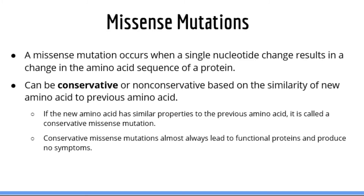The next type of point mutation we will talk about are missense mutations. A missense mutation occurs when a single nucleotide change results in a change in the amino acid sequence of a protein. Missense mutations can be conservative or non-conservative based on the similarity of the new amino acid to the previous amino acid. If the new amino acid has chemical properties which are similar to the original amino acid, the protein will still be functional and the mutation will likely have no effect. This is called a conservative missense mutation.